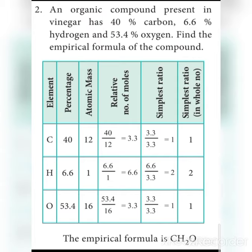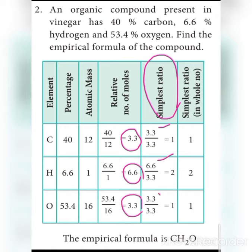Now we go to the third step: find the simplest ratio. The number of moles are — carbon: 3.3, hydrogen: 6.6, oxygen: 3.3. The lowest number is 3.3. Divide all values by the lowest factor, 3.3.